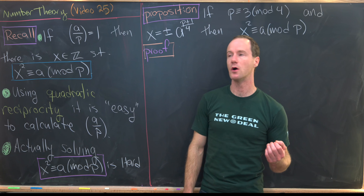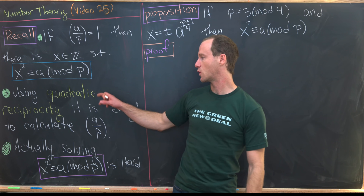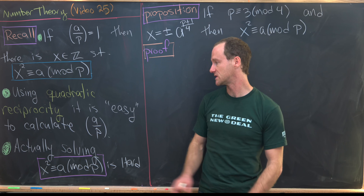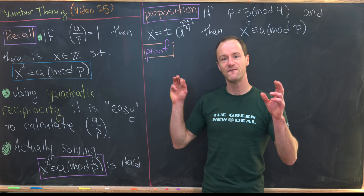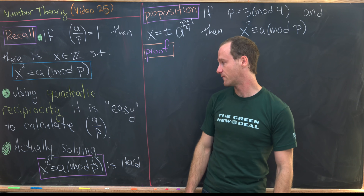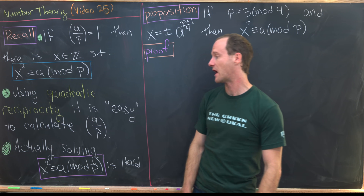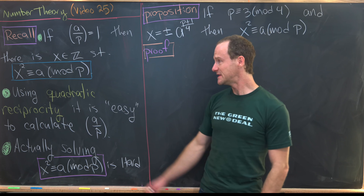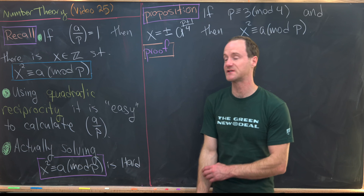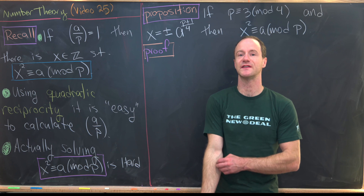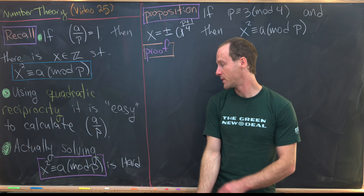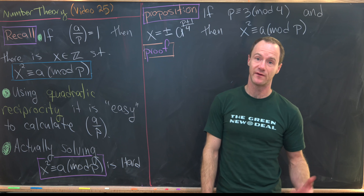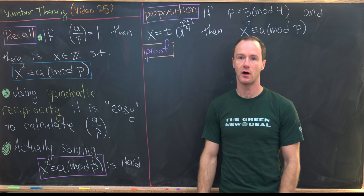Another thing we know is that using quadratic reciprocity — a very beautiful and powerful result — it is fairly straightforward to calculate the value of the Legendre symbol. That means it's fairly easy to decide if a congruence like this has a solution, but actually solving it is often very hard.